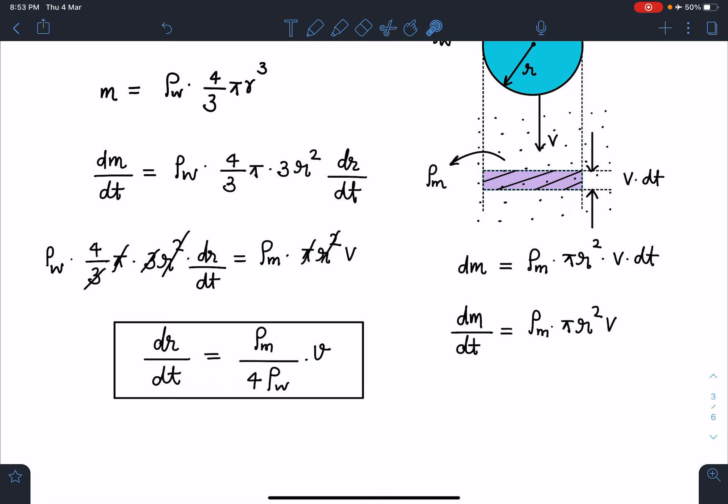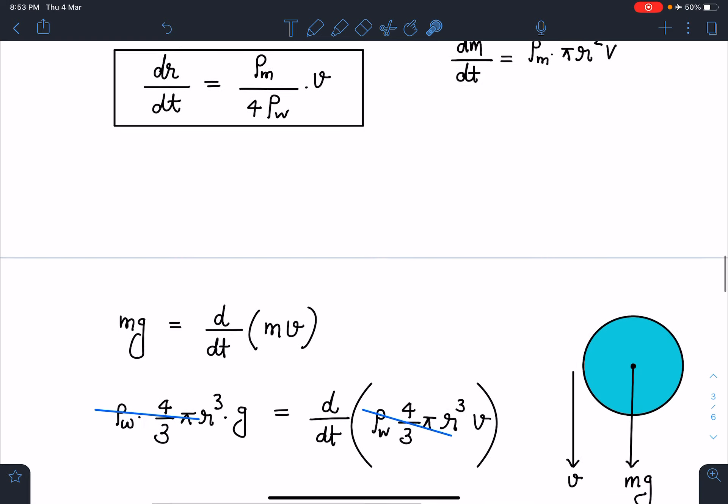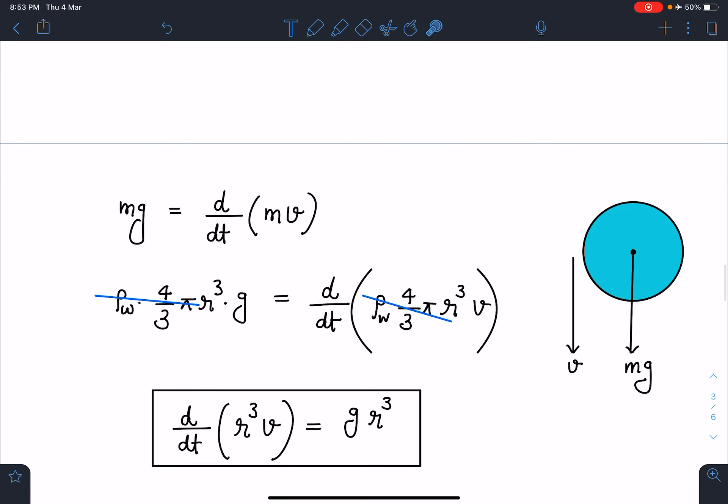Now I can use impulse momentum theorem. The net external force on this drop is mg, so mg = d/dt of change in linear momentum. When I substitute the values, I get ρ_w·(4/3)πr³·g = d/dt(ρ_w·(4/3)πr³·v). I'm going to get another important equation: d/dt(r³·v) = g·r³.